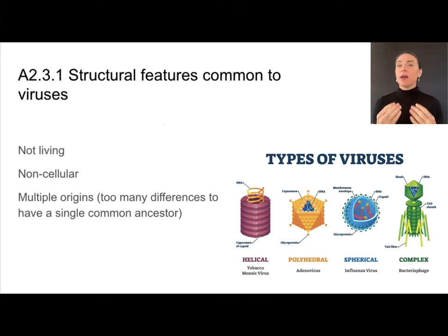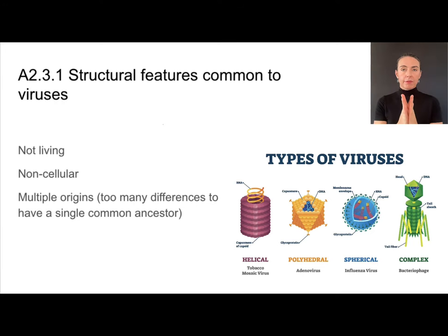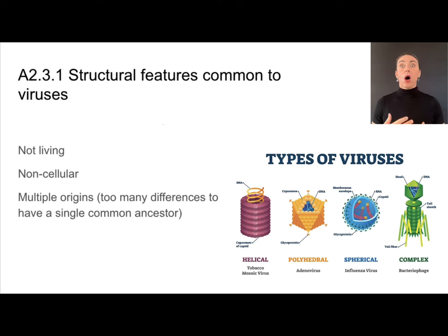Viruses are not made out of cells. We think that they probably evolved spontaneously several different times. So unlike living organisms that all came from one common ancestor, it's likely that viruses evolved spontaneously several times — that's the only way to explain all of their differences.